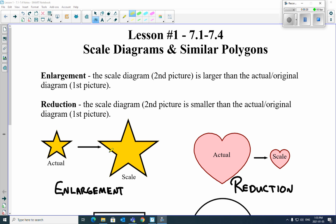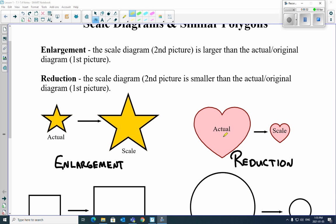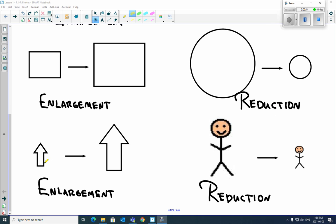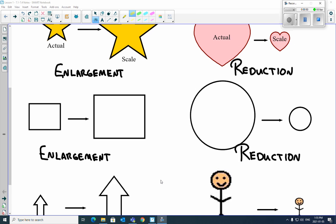So in this case, it's going from smaller to larger, so it's an enlargement. This one here, the actual, and then we move to a scale diagram. So we're getting smaller, so it's a reduction. So then you can see this one here, small to large, enlargement, large to small, reduction. Then the bottom one here, the arrow, small to large, enlargement, large to small, reduction. So these are all just enlargement and reductions.